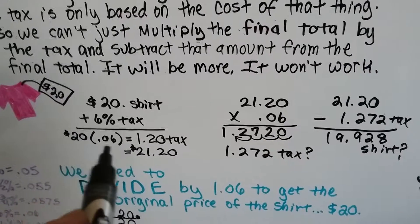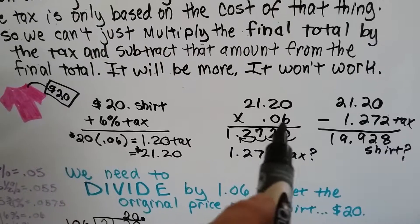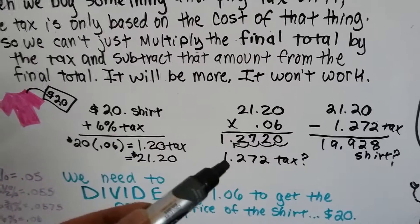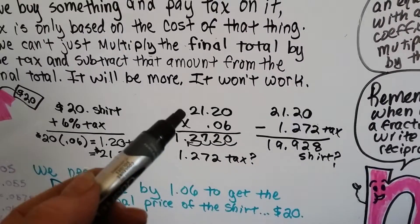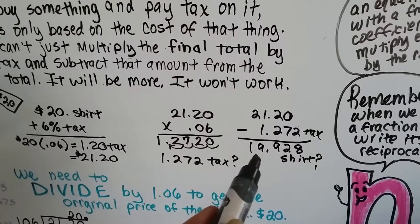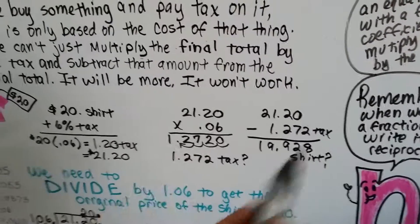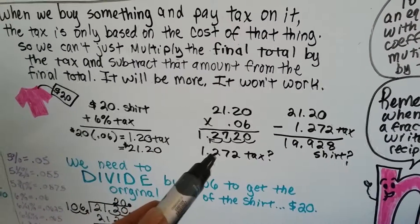Well when we multiplied the $20 by the .06, we were multiplying $20. Now when we're doing it, we're multiplying 2120. It's a bigger number. So of course we're going to get a bigger product. And if we deduct this amount from the 2120, it's going to come out as $19.928 for the shirt. It didn't work. You can't just do that. You're starting out with a bigger number. It's going to have a bigger amount of tax.